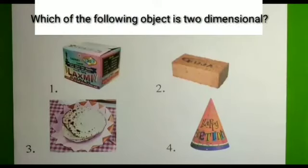Now we will solve a question. Which of the following object is two-dimensional? First we have chalk box. Second we have brick. Third we have chapati. And fourth we have cone. The correct option is option three, chapati. Now it is time for homework.